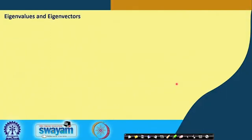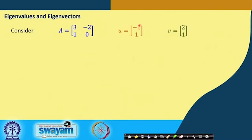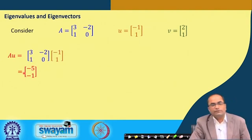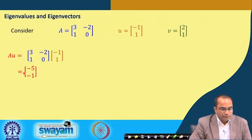What are the eigenvalues and eigenvectors of a matrix? Let us consider this simple 2x2 matrix A given by [3, -2; 1, 0], and then we consider two vectors: U = [-1, 0] and V = [2, 1]. If we compute the product A times U, we get [-5, -1].